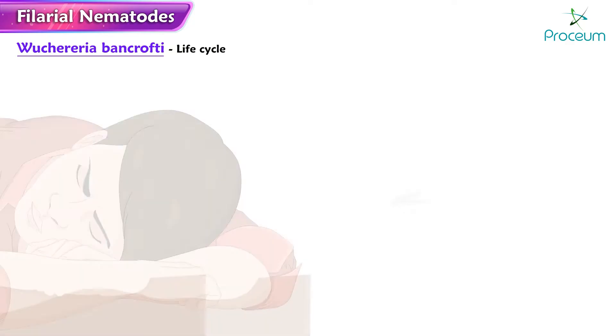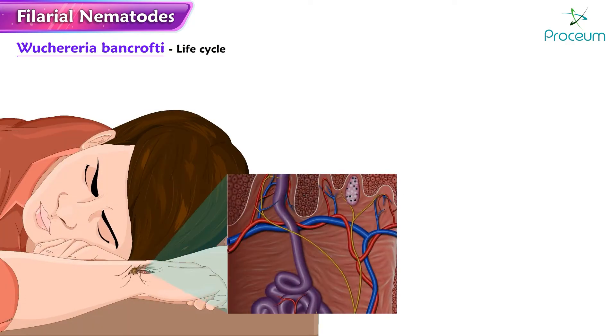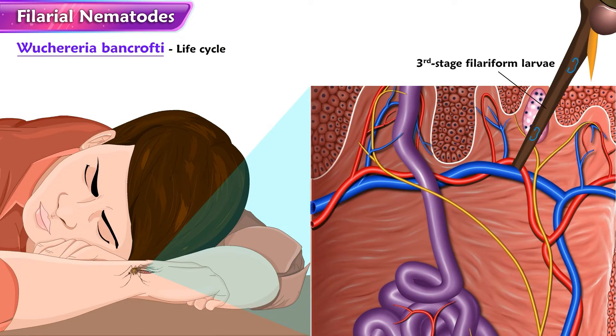The Life Cycle of Wuchereria bancrofti: During a blood meal, an infected mosquito introduces third-stage filarial larvae onto the skin of the human host, where they penetrate into the bite wound.